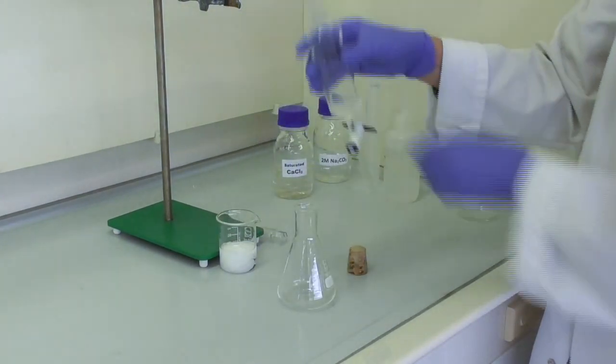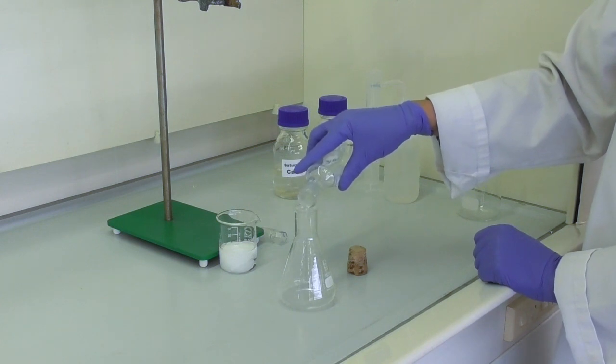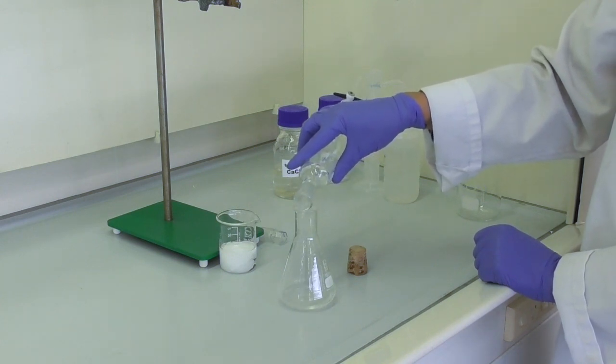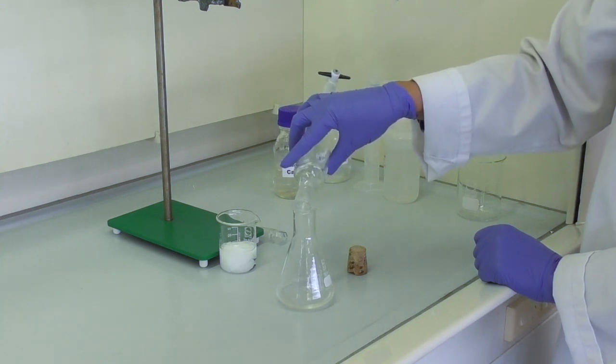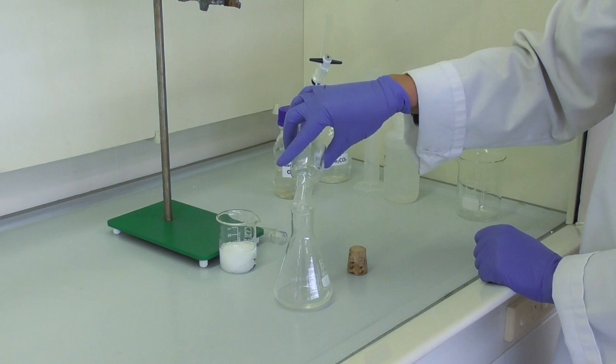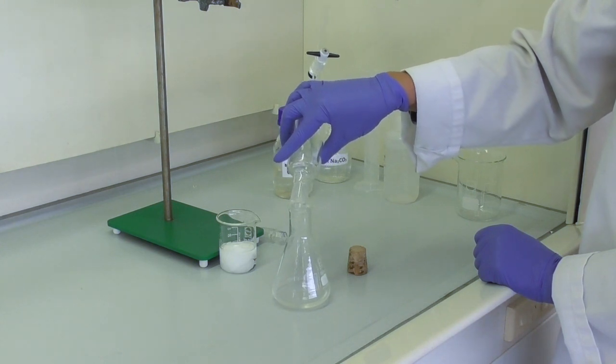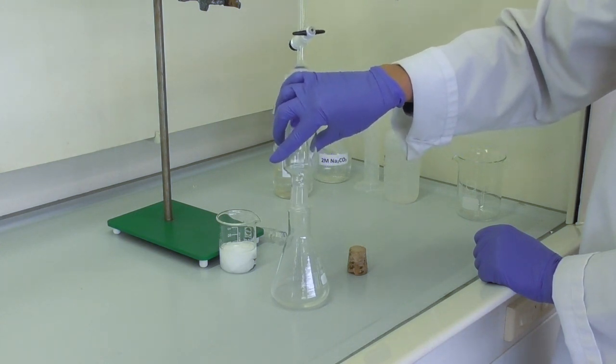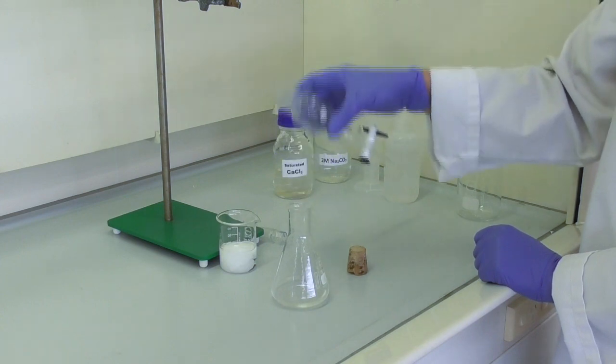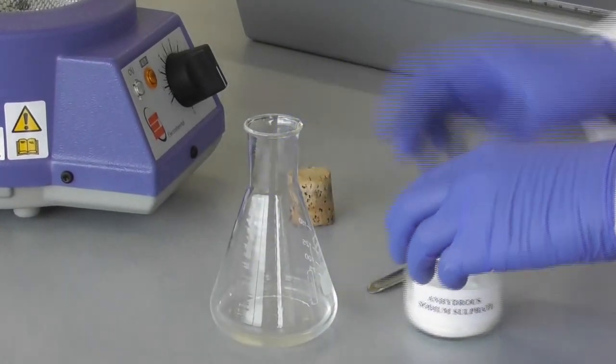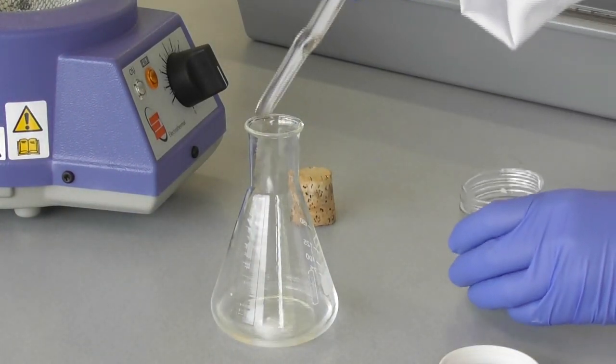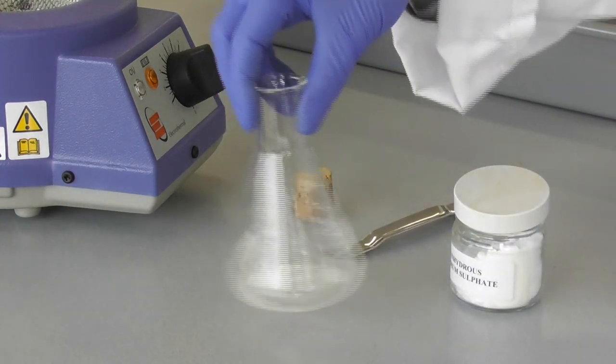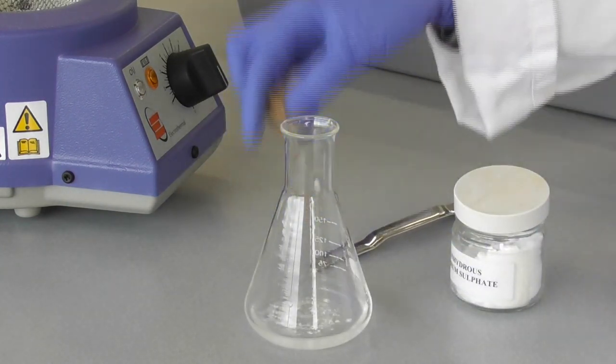Now that we are done with the washing process, we pour the remaining organic extract into a dry conical flask, stopper the flask, and take it to the bench. Since we have already added a drying agent, this does not require a lot of sodium sulfate. Usually a spatula full will dry the solution completely.